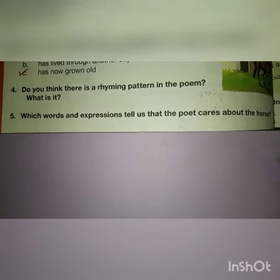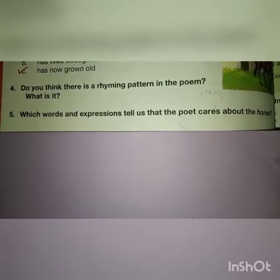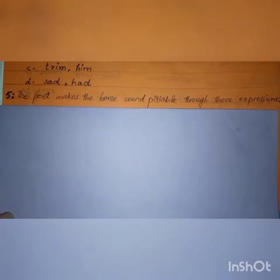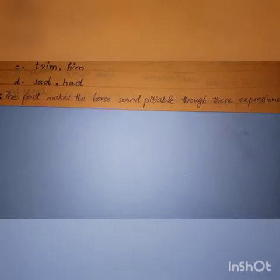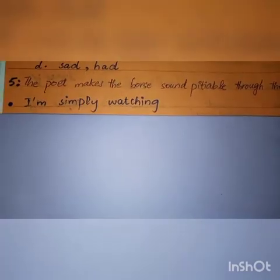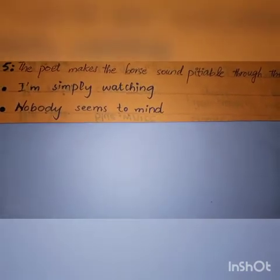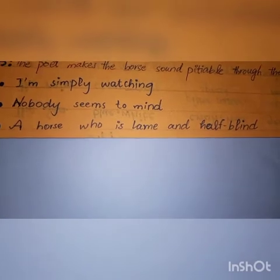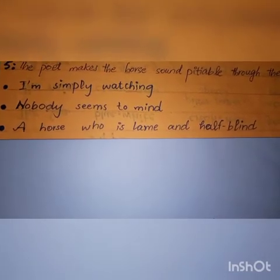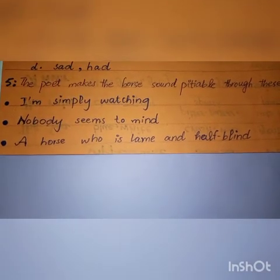Question 5: which words and expressions tell us that the poet cares about the horse? The poet makes the horse sound pitiable through these expressions: 'I am simply watching,' 'nobody seems to mind,' and 'a horse who is lame and half blind.' These expressions tell us that this old brown horse is pitiable and the poet cares about him.